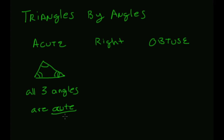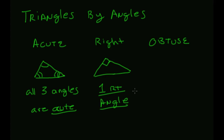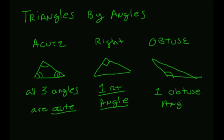In a right triangle, you have one right angle and two acute angles. In an obtuse triangle, you have one obtuse angle and two acute angles.